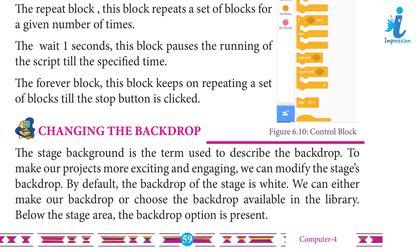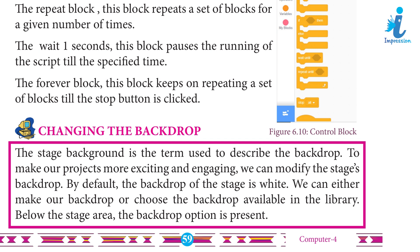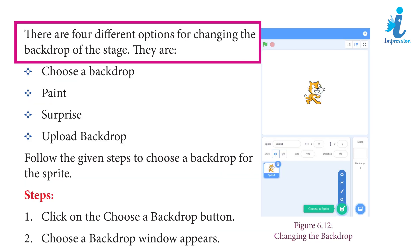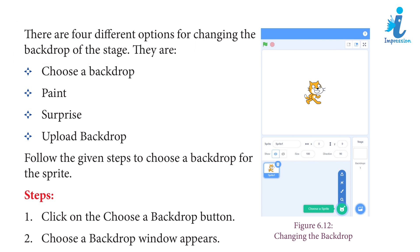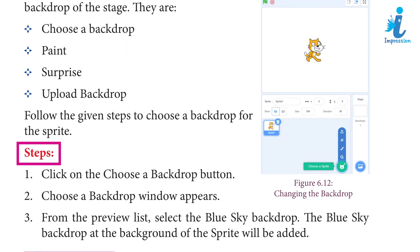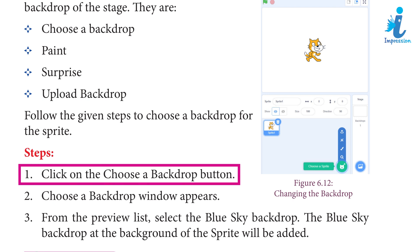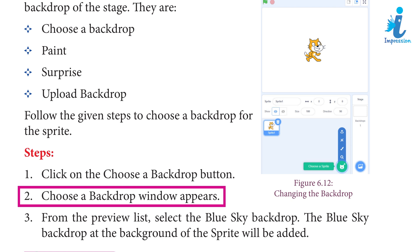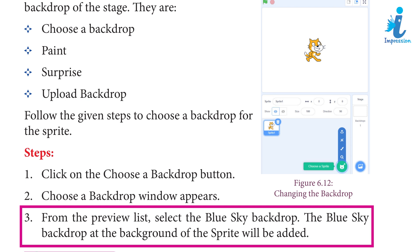Changing the Backdrop: the stage backdrop is a term used to describe the backdrop. To make our projects more exciting and engaging, we can modify the stage backdrop. By default, the backdrop of a stage is white. We can either make our own backdrop or choose one available in the library. Below the stage area, the backdrop option is present. There are four different options for changing the backdrop: Choose a Backdrop, Paint, Surprise, and Upload Backdrop.